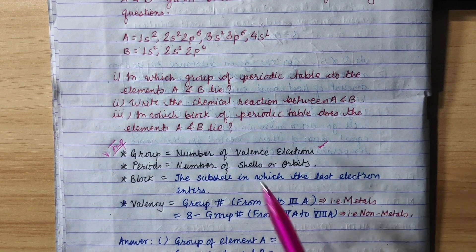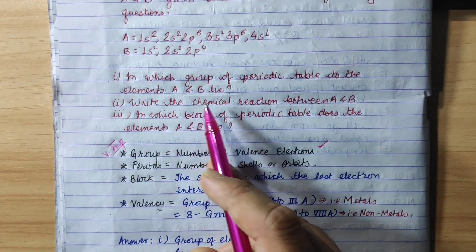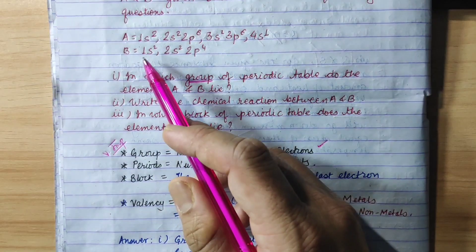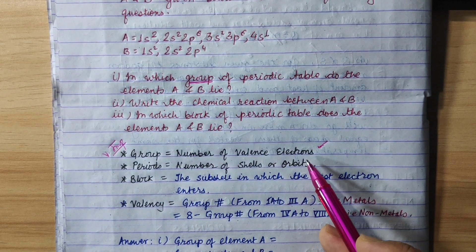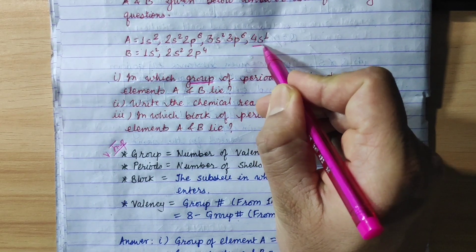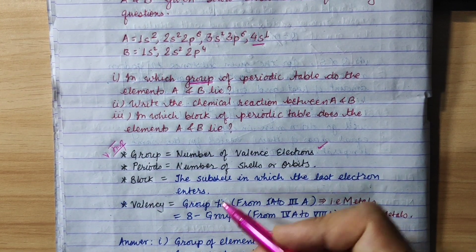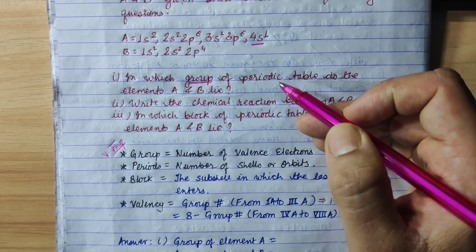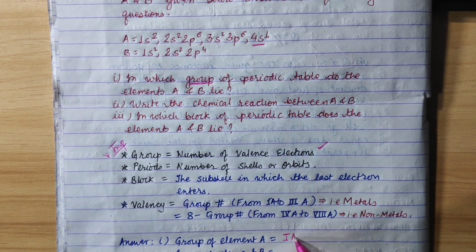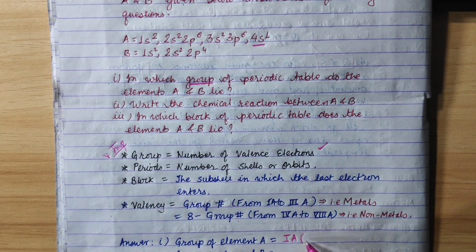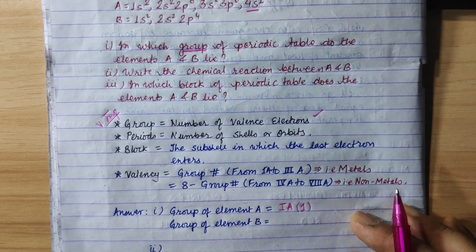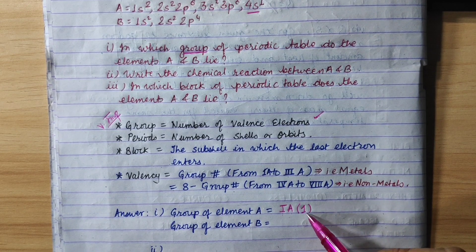Now let's go to the main question: in which group of the periodic table do the elements A and B lie? The group is equal to the number of valence electrons. Looking at element A's electronic configuration, it has 1 valence electron. In the old grouping system this is group 1A; in the new grouping system this is group 1.